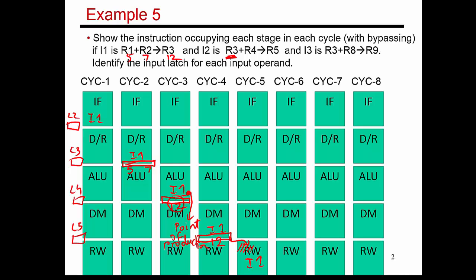Now let's look at the second instruction that's trying to consume the value R3. It reads the instruction in cycle 2 and reads something from the register file in cycle 3. What it's putting into latch L3 is some old value of R3 and the correct value of R4. So in L3, you have old R3 and correct R4. If I2 were to proceed to the ALU stage, it's getting the correct input for R4 from L3, but an incorrect value of R3 from L3.